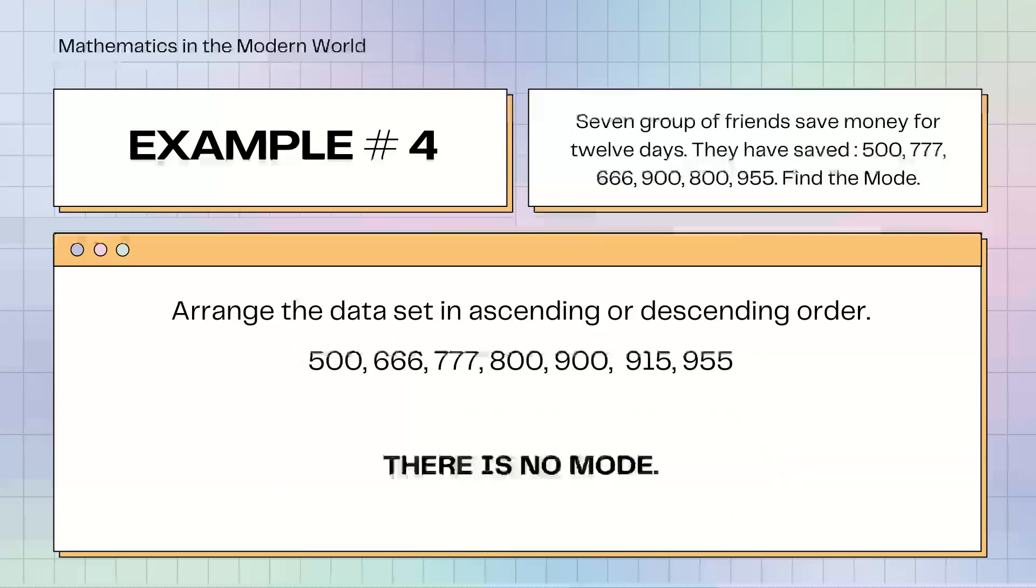Example number 4. 7 group of friends save money for 12 days. They have saved 500, 777, 666, 900, 800, 955. Find the mode. After we arrange the dataset in ascending or descending order, as we can see, there is no mode in example number 4.